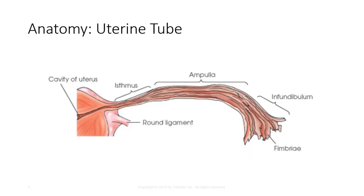The uterine tubes, also called fallopian tubes, arise from the lateral angle of the uterus on each side and open into the peritoneal cavity. They function to collect ovum released by the ovaries and convey it to the uterine cavity. Each is typically 3 to 5 inches, or 7.6 to 13 centimeters long, and can be divided into three parts: the isthmus, the ampulla, and the infundibulum.